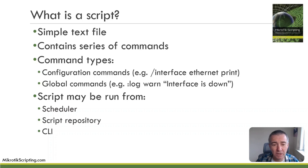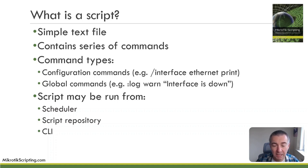There are actually two types of commands in RouterOS that are useful to be aware of. First, there are configuration commands, which you're probably fairly used to — for example, a command to print out all of the Ethernet interfaces. These all begin with a forward slash, so for example '/interface ethernet print'. All commands beginning with a forward slash are configuration commands that alter or provide information about the MikroTik configuration. Then there are global commands, which I think of as the scripting commands — these are the ones we'll learn most about, and they begin with a colon. For example, a logging command that logs a warning message into the MikroTik logging system.